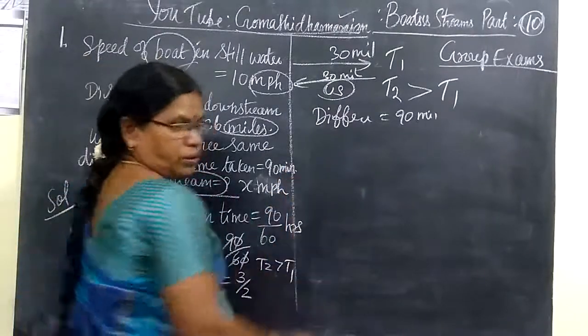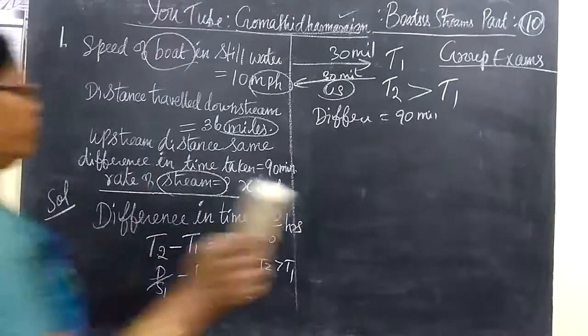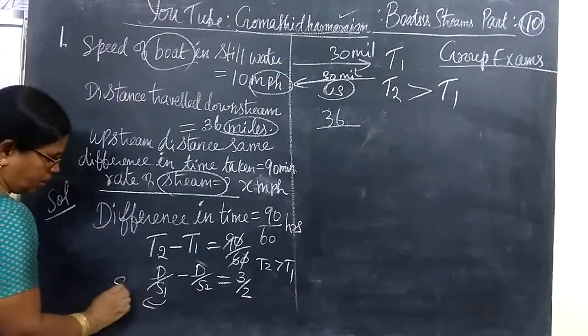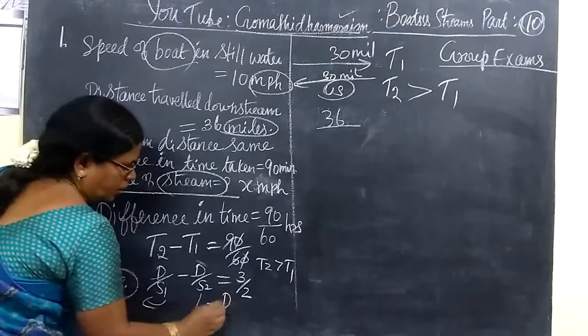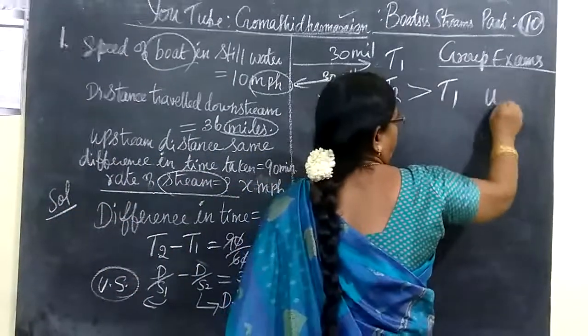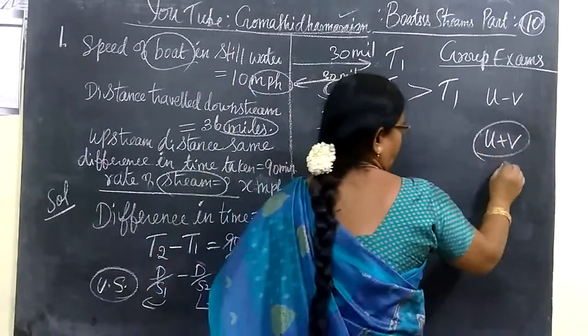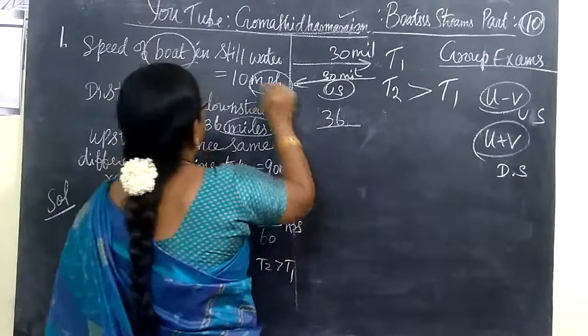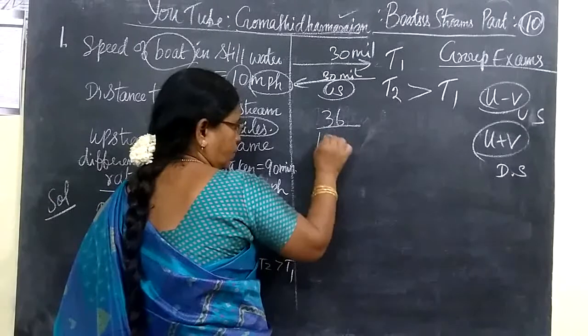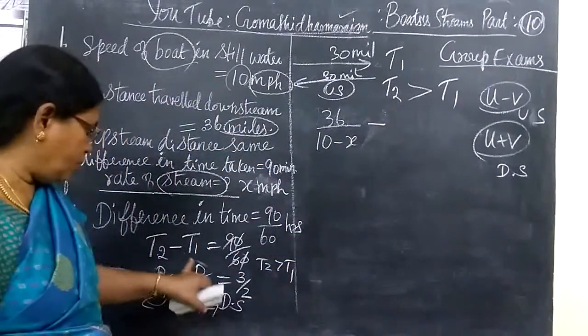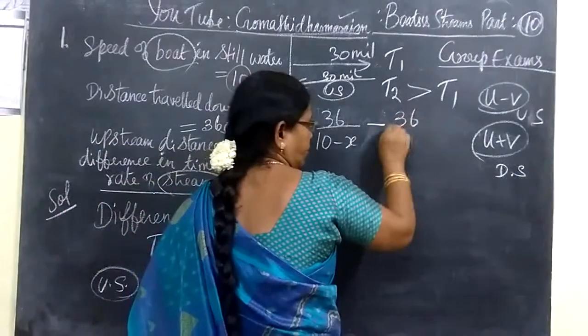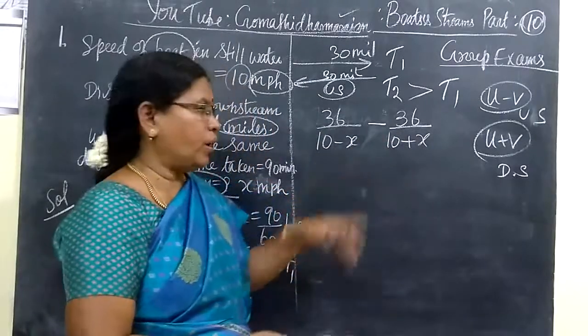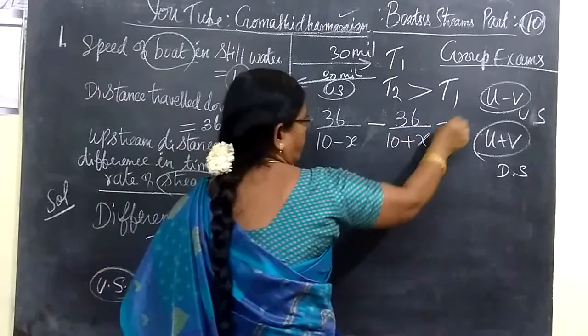Distance is given as 36 miles. So, you have to write here 36. And here, this is upstream. For upstream, you know that is U minus V. For downstream, U plus V. So, you can write here 36 by 10 minus X. Upstream is 10 minus V. Then, the same distance 36 by 10 plus V. But the time for upstream is more value. So, this equals 3 by 2.